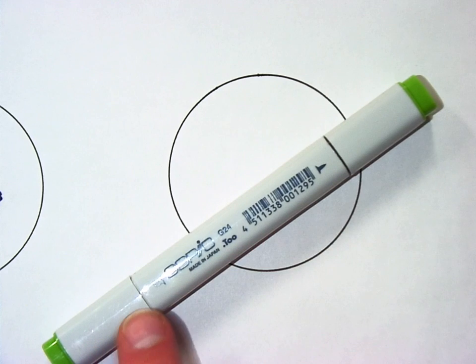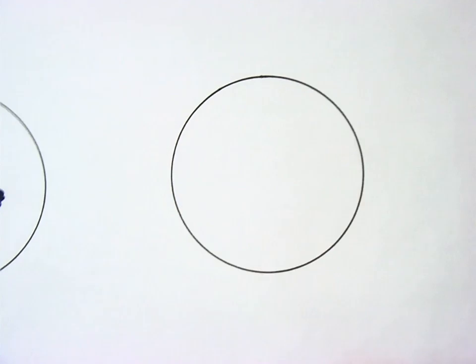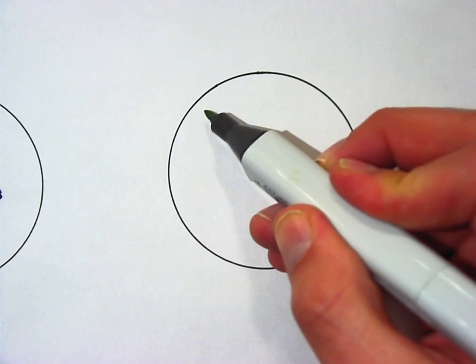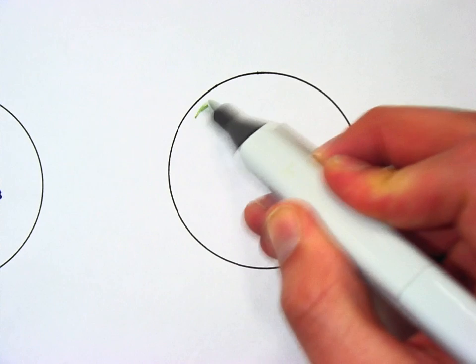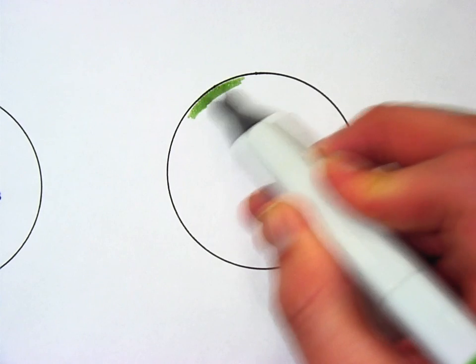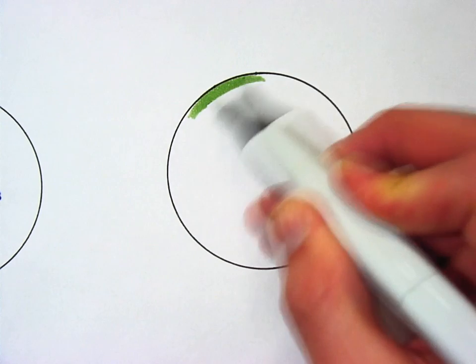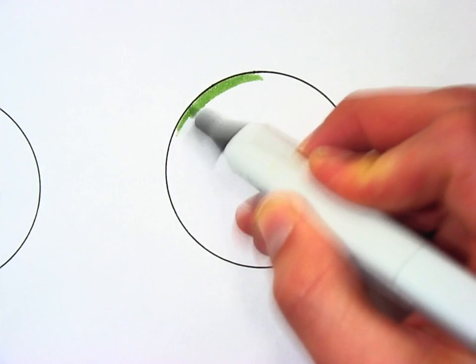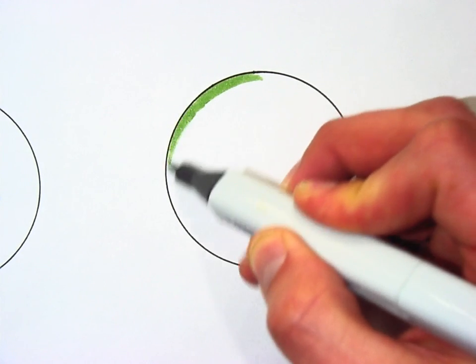And you're going to do the same thing. You're going to start with the skinny end, start kind of away from the edge, and then work your way to the edge. Now if you go over the top of your ink with these color markers, the ink actually gets thicker and it gets a little bit darker.